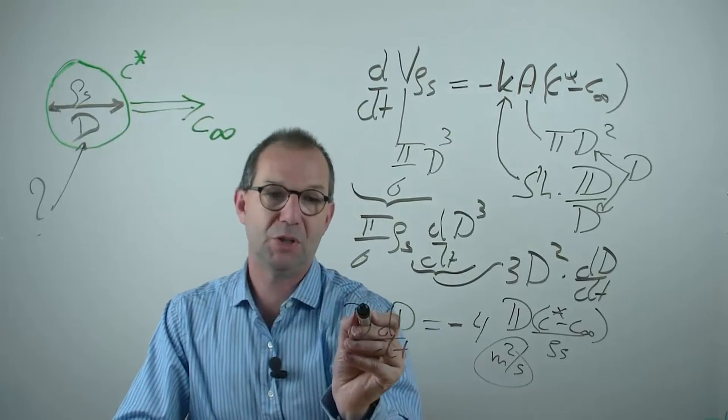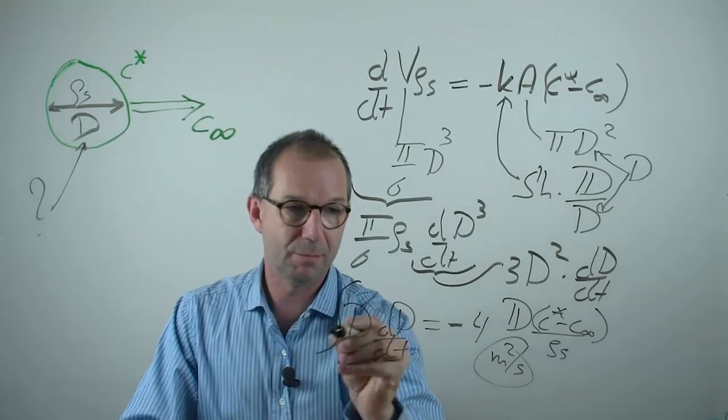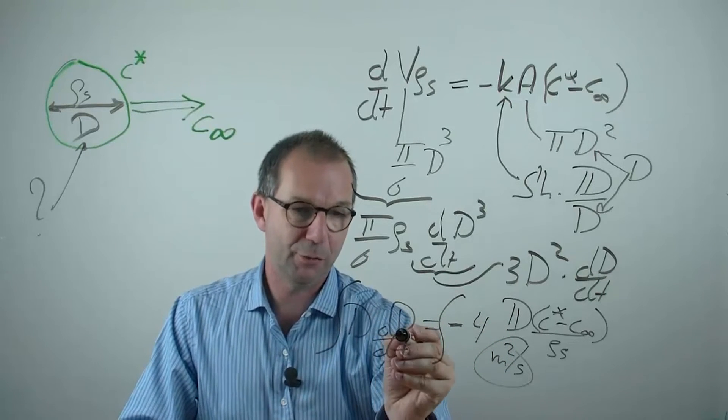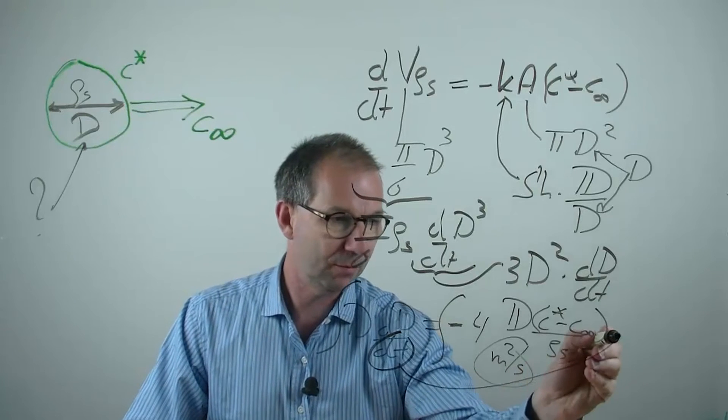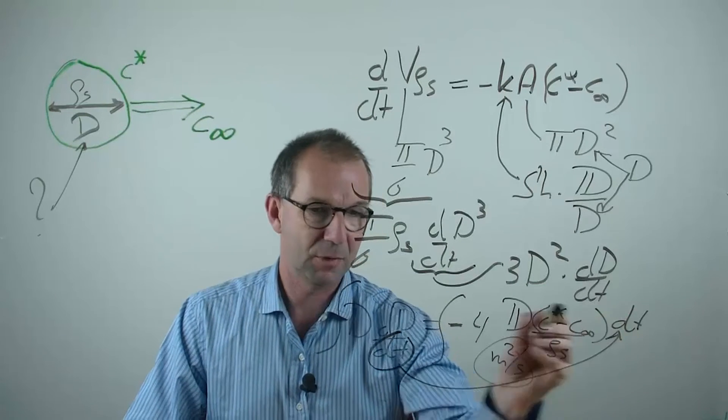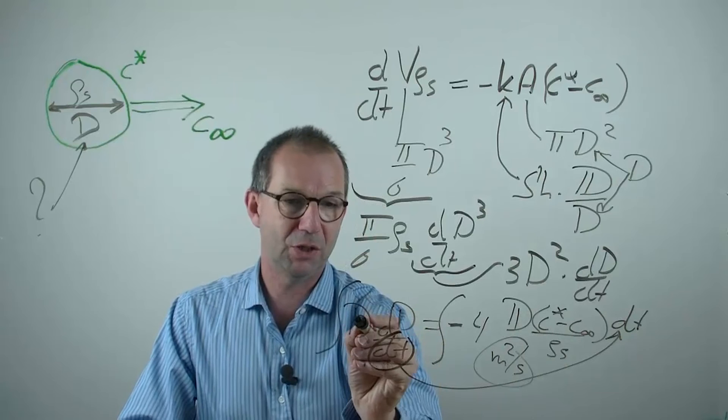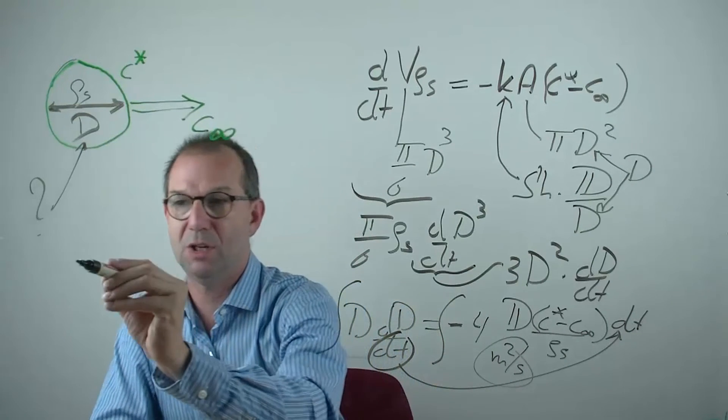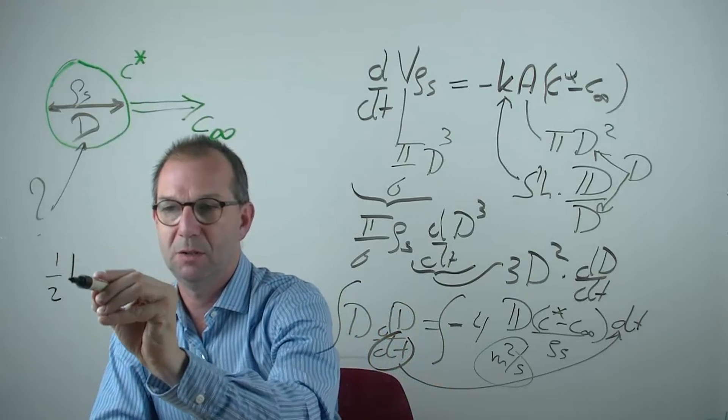Let me do that here on this side of the board. If I integrate both sides, integrating D by itself, I move over this dt to here. Now we get an integral of the function D times the dD capital D. So this gives me half D squared.